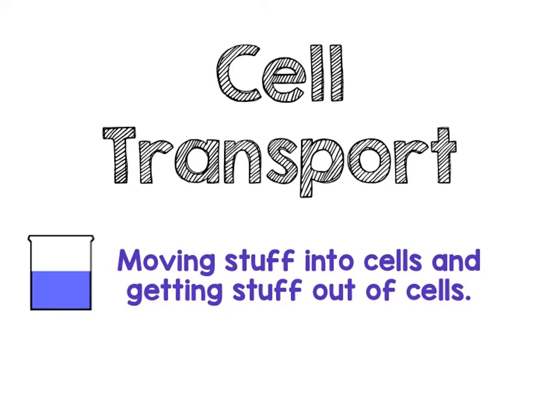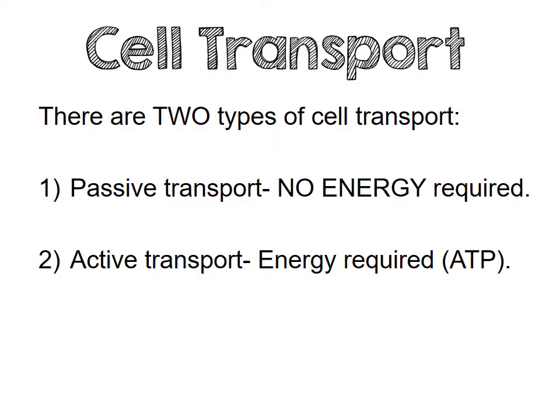Today we're going to talk about cell transport and how stuff moves into and out of the cells through the cell membrane. There are two types of transport that we're going to discuss. The first type is passive transport, and in passive transport there is no energy required. The second type is active transport, and for that type you need to use energy.